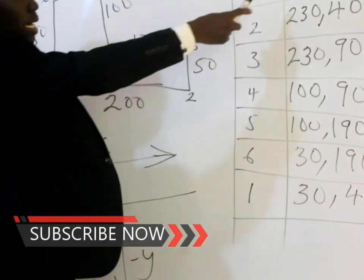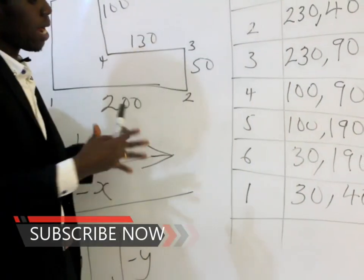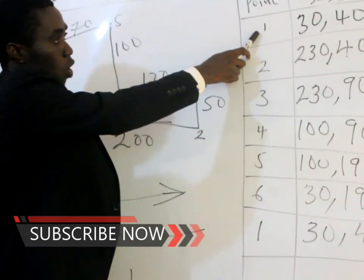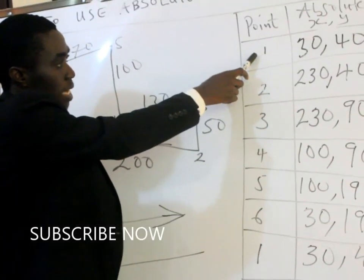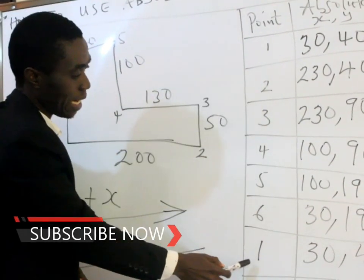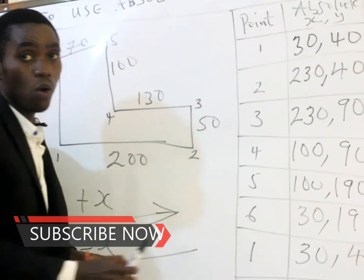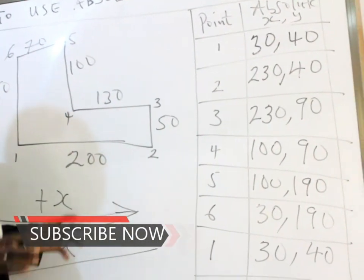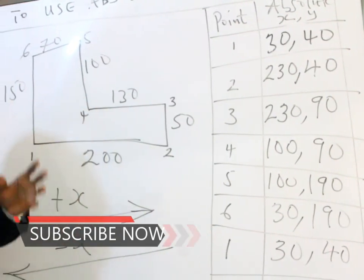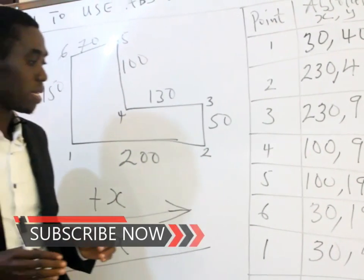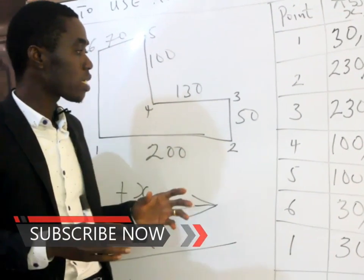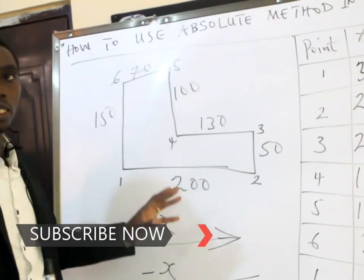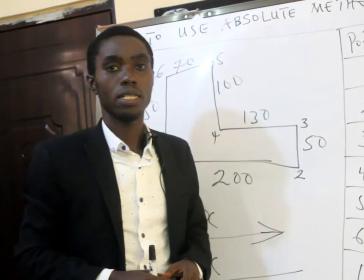You can see clearly that in the absolute method, the first coordinate — the first point and the last point — are the same. So if your first point and last point are not the same, please go and check your coordinates and do it again.